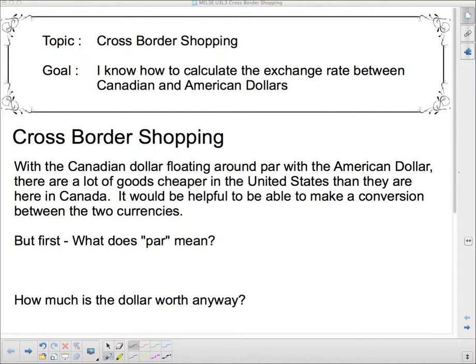So we're talking a little bit about cross-border shopping. With the Canadian dollar floating around par with the American dollar, there are lots of goods cheaper in the United States than they are here in Canada. It would be helpful to be able to make a conversion between the two currencies so you can see whether it's actually cheaper over there or not. But first, what does par mean?